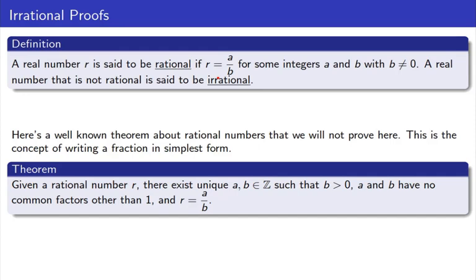Now, one of the things that we know about our fractions is that they can be written in simplest form. Here's the official way to word this. Given some rational number r, you can find a unique pair of integers a and b, with b greater than zero, a and b having no common factors other than one, and r is equal to a over b. So you can assume that the denominator is positive, and that a and b have no common factors other than one, and that puts it in reduced form.